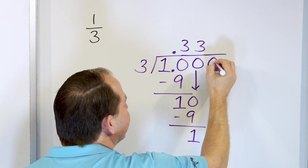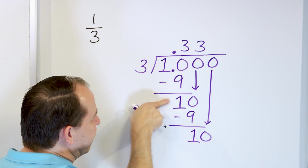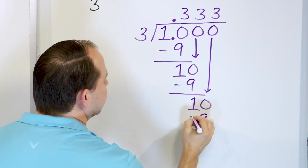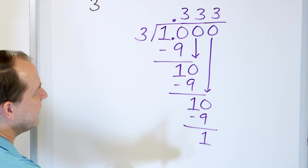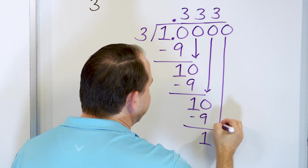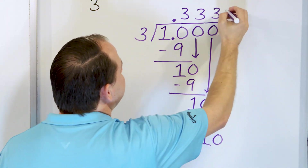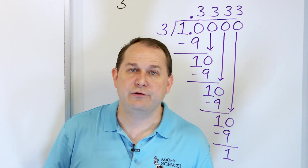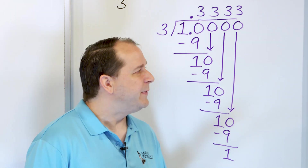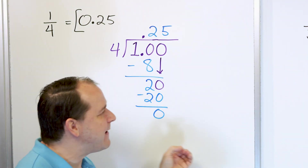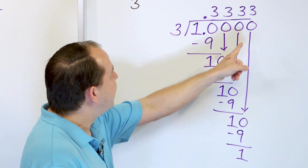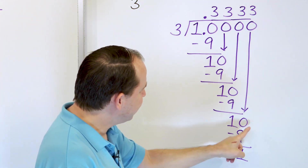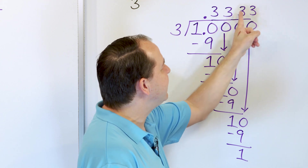We continue — we drop yet another 0 and drag it down, giving us a 10 again, same as before. 3 times 3 is 9, as close as I can get. Subtract — yet again a remainder of 1. If I continue this process, I will never stop because what I'm trying to do is get down to a remainder of 0, but it never, ever happens. As I keep dragging zeros down, I get another 3, then another 10, then another 3, and so on. These threes in the answer will just continue forever.